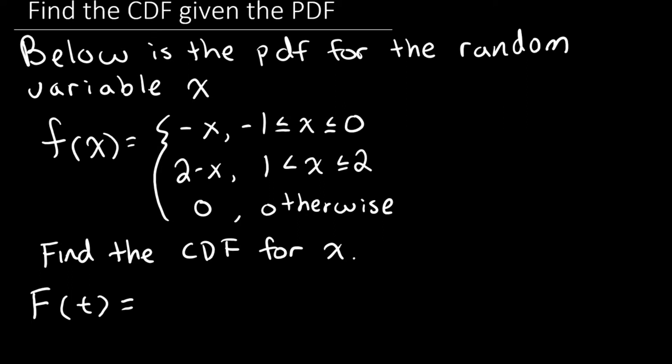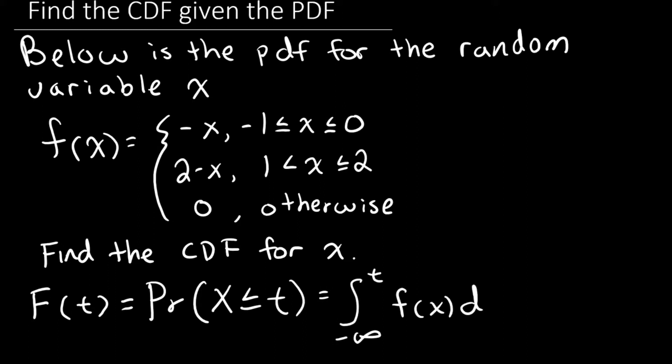By definition, F of t is equal to the probability that x is less than or equal to t. Since x is a continuous random variable, the probability that x is less than or equal to t is equal to the integral from negative infinity to t of the PDF with respect to x. Since we are integrating over x, this is why we like to use t, so that we don't end up plugging in x after integrating over x, which can feel uncomfortable.